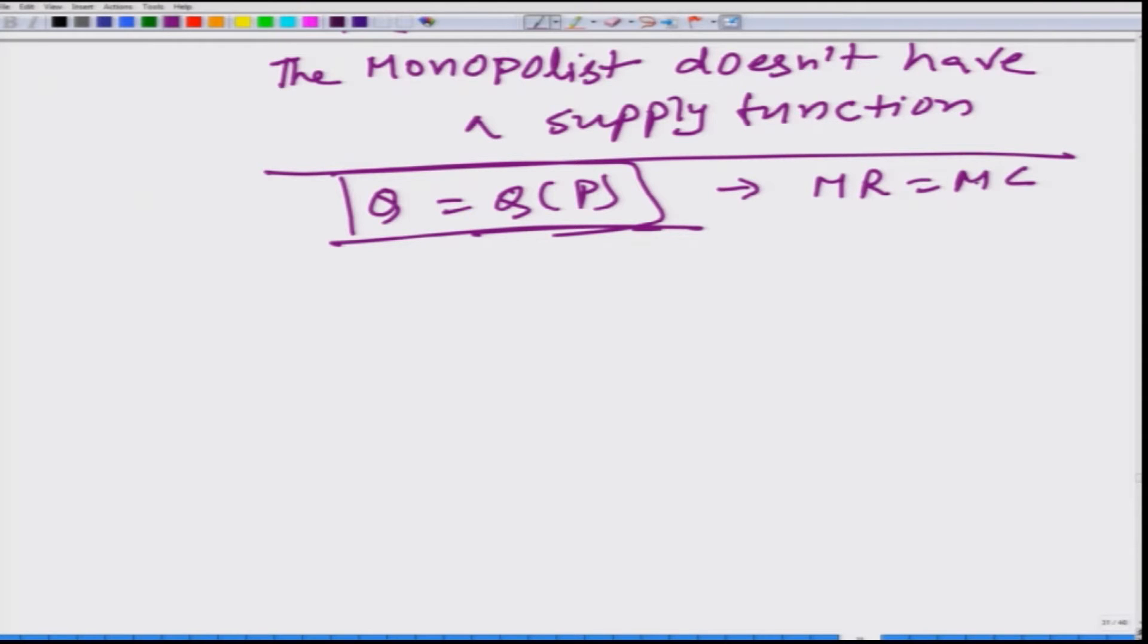And MR in case of a firm operating in the perfectly competitive market is simply P. And MC is a function of output, and from here we derived Q as a function of P.